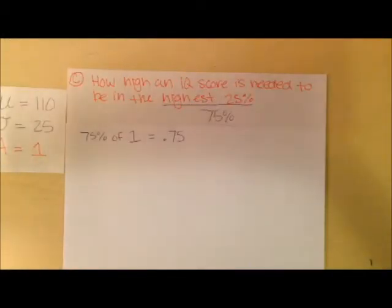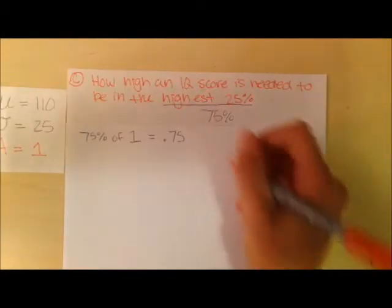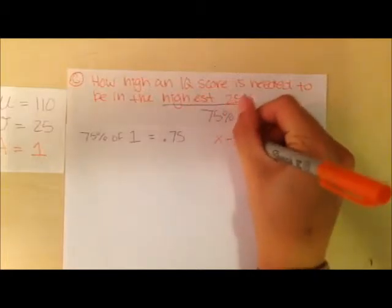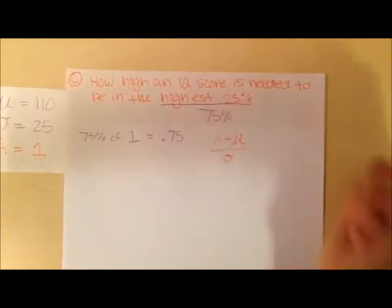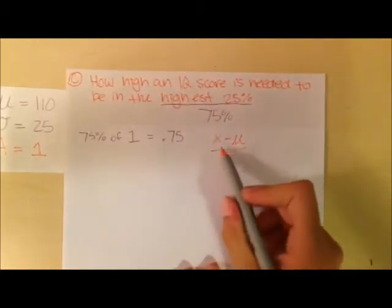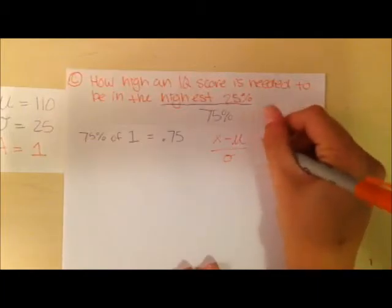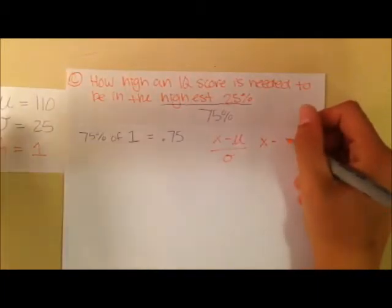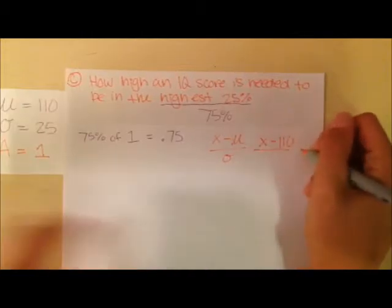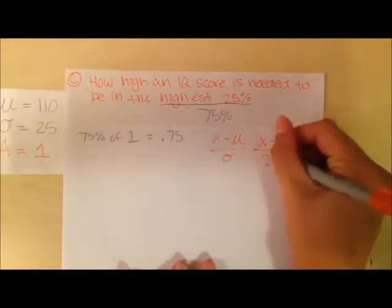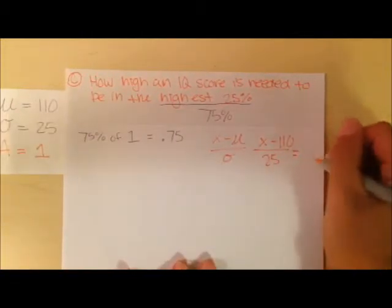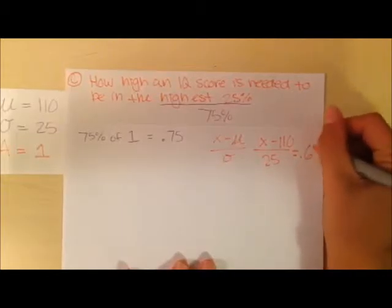We use that equation that we used before of our given value minus the mean over standard deviation. This time, we don't know X, so we're going to just leave it. X minus the mean of 110 all over the standard deviation of 25 equals that Z score we just got off our table, 0.68.